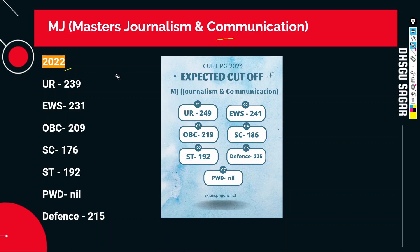Here you will see all the updates from Dr. Hari Singh Gour Vishwavidyalaya. In the first course we will talk about Masters in Journalism and Communication. We are comparing with 2022, because before this the university conducted it by itself. CUET was conducted last year. So we are comparing with last year's cutoff. That cutoff was: UR 239, EWS 231, OBC 209, SC 176, ST 192. PWD didn't have any student, and Defense 215.